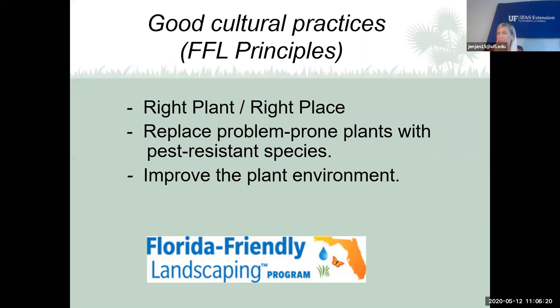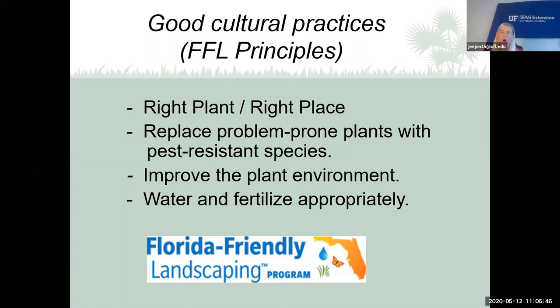Sometimes it's about improving the plant environment. Oak trees grow and shade out plants that were once in the sun, causing them to struggle. Or an oak falls and plants once in shade are suddenly in full sun. Sometimes you just need to find the right place again. We always want to water and fertilize appropriately — insects love when we overwater and over-fertilize, because plants grow quickly and their new growth is very thin, succulent, and vulnerable to pests.